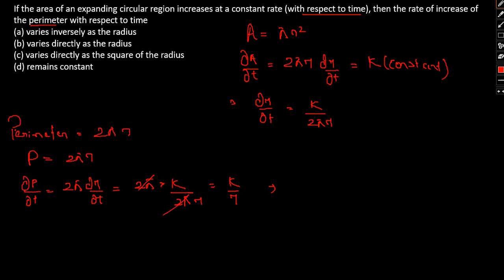So here we can see dP/dt is inversely proportional to the radius. That is option... sorry, not option b. Option a is the correct answer.